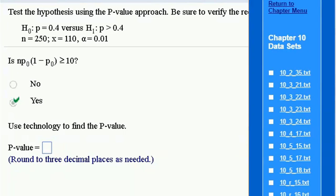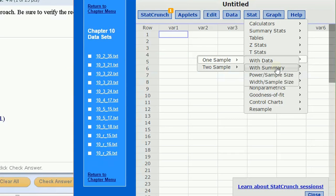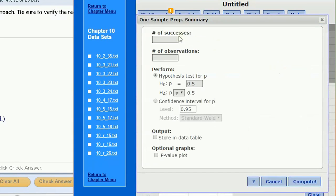So, let's find this p-value. Under the stat menu in StatCrunch, we're going to go for proportion stats, one sample, proportion stats with summary. And here we're going to set the number of successes, was 110, that's our sample frequency, out of 250.